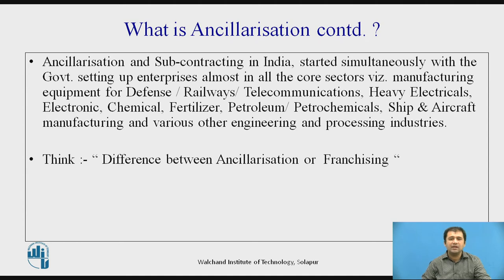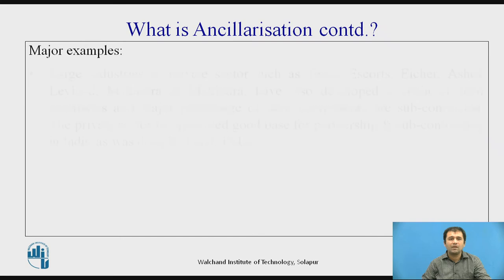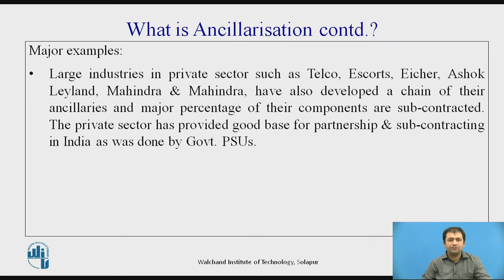Similarly, in defense and railways, as these are long-term projects, they cannot do everything in-house or set up large industries to manufacture everything. So they generally go for ancillerization or subcontracting. Some major examples include large private sector industries: Telco, Tata Motors, Escorts, Isher Motors, Ashok Leyland, Mahindra and Mahindra — these are examples from the auto segment. Recently, Amara Raja Batteries and Exide Industries have also developed a chain of ancillaries, and a major percentage of their components are subcontracted.